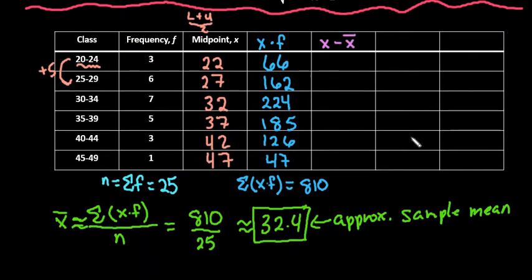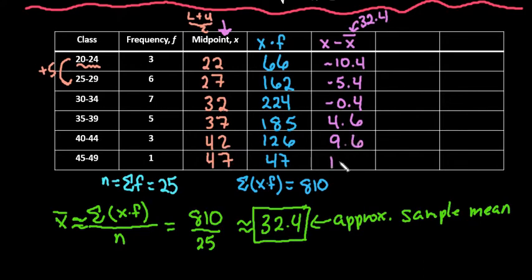Okay, so to find the x minus x bar, remember that we just found that our x bar is 32.4. So I'm going to take 22 minus 32.4, which gives me negative 10.4. And then I'm going to take 27 minus 32.4, 32 minus 32.4, 37 minus 32.4, and then I'm going to continue the 42 minus 32.4 and the 47 minus 32.4. All right, on to the next column.